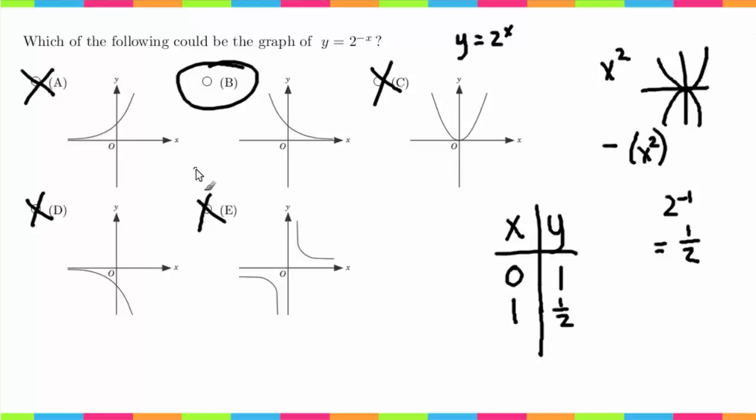Going back to what I was talking about earlier, this is a parent function, and this negative x flips this over the y-axis. So this would be the graph of y equals 2 to the x, and then when you make this negative, it flips it this way—so everything over here goes over there. If you had something like y equals negative 2 to the x instead, that would flip it over the x-axis.